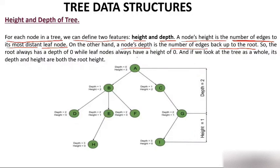Let's understand with this figure. A node's height is the number of edges to its most distant leaf node. If I talk about node I — does I have any leaf node? No. So height of I is 0. Leaf node height is always 0. If I talk about depth of node I, depth is considered from the root node. There are 1, 2, and 3 edges to reach I, so depth of I is 3 but height is 0.